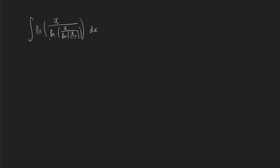The problem at hand is the integral of the natural log of x over the natural log of x over the natural log of x, over... I think you get the picture. This is called an infinitely nested function or infinitely nested recursion. Often the easiest way to go about this is to play around with our function and see if we can find a closed form expression of it. We're going to start by setting y equal to the natural log of x over the natural log of x, repeating.